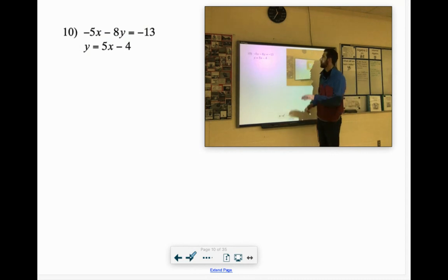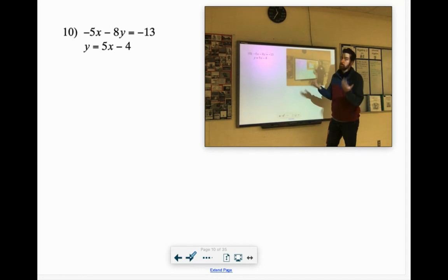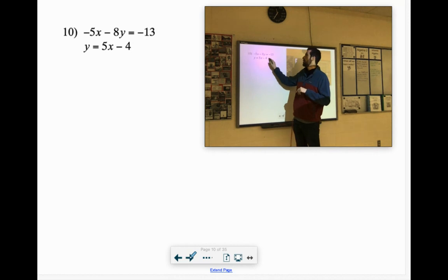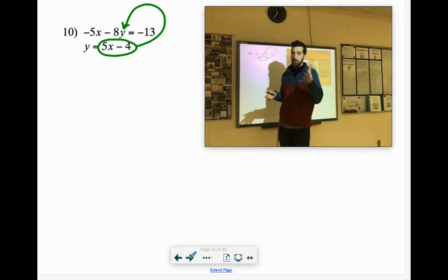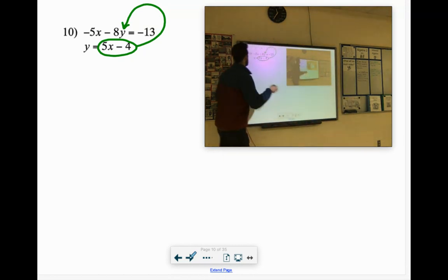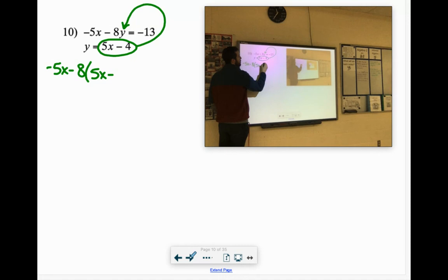Let's try another one. Ooh, ooh, do we have x or y all by itself? Yeah, we do. It's in the second equation. We have y equals 5x minus 4. We're going to be substituting that in where I see a y right there. Now, when we substitute it in and there's stuff in front of it, it's important to put it in parentheses. So it would say negative 5x minus 8y, which now y is 5x minus 4, equals negative 13.